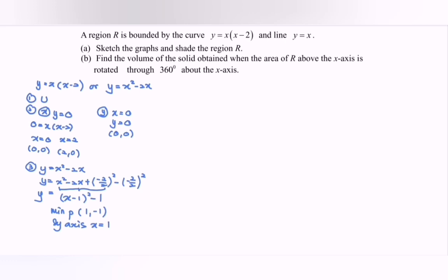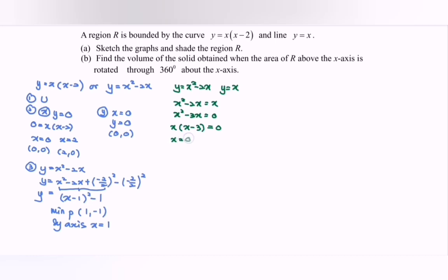Next, we find the intersection point between the two graphs. We have Y equals X squared minus 2X and Y equals X. Substituting gives X squared minus 2X equals X, so X squared minus 3X equals 0, which factors as X(X minus 3). So X equals 0 and X equals 3. When X equals 0, Y equals 0; when X equals 3, Y equals 3. So the points of intersection are (0, 0) and (3, 3).